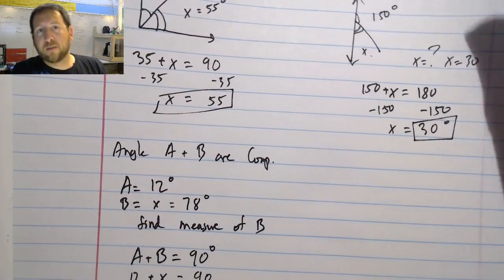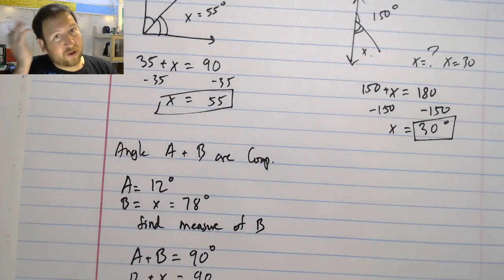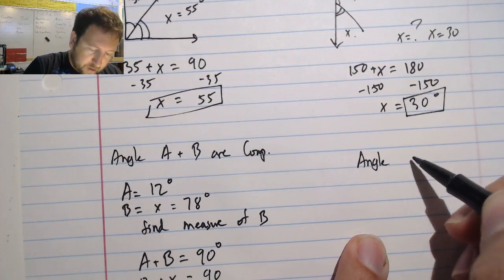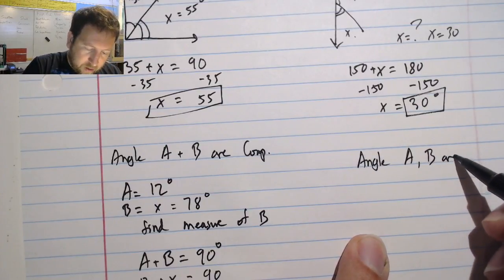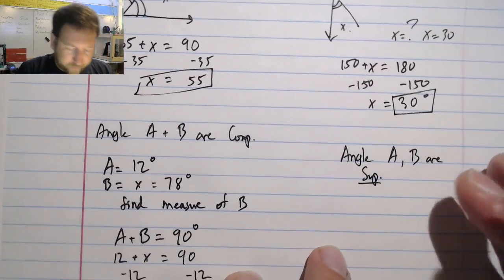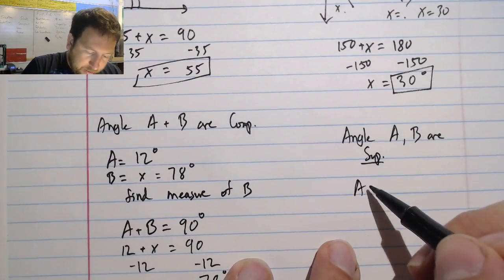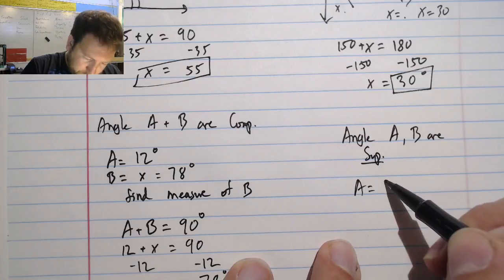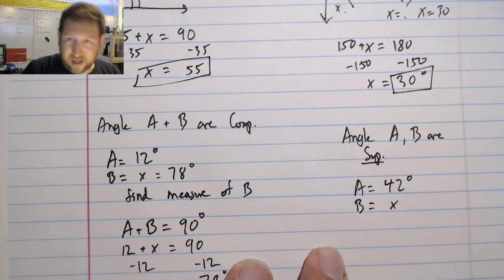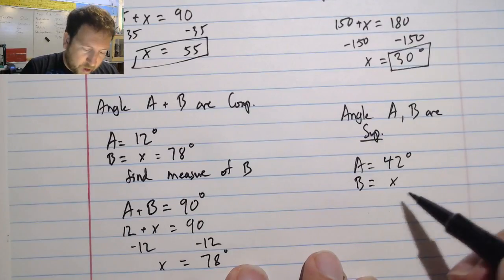And just like we did before, what if they don't give us a picture at all? They just say that angles A and B are supplementary, not complementary. A equals 42 degrees. B equals x. What is B?